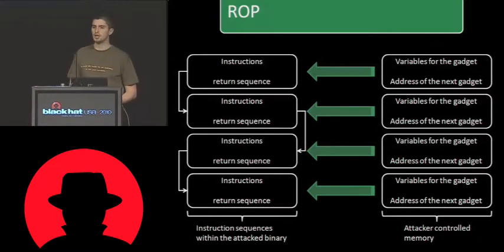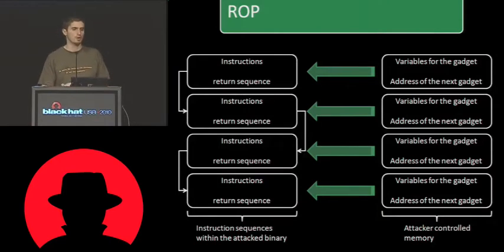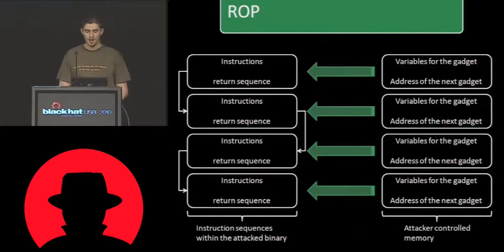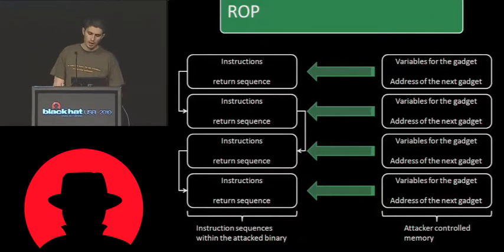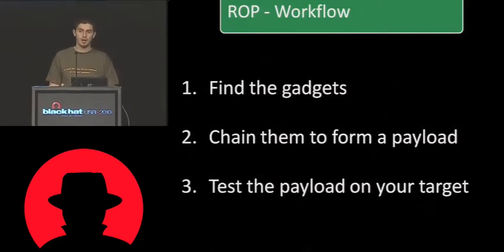What you are trying to do here is get a few different gadgets, chain them together, so that you are able to have a meaningful payload. When your shellcode is first executed, it will at some point reach what is called a return sequence. A return sequence basically pops the next instruction pointer from the stack. This way you are able to continue the execution using your payload. Return-oriented programming basically consists of three parts: find the gadgets in the libraries or in the main executable, chain them together to form a payload, and finally test the payload on your target.